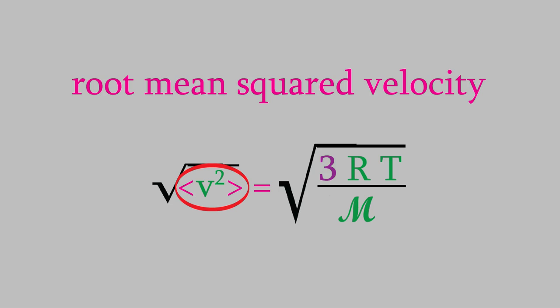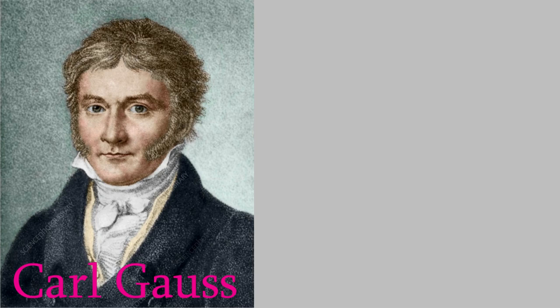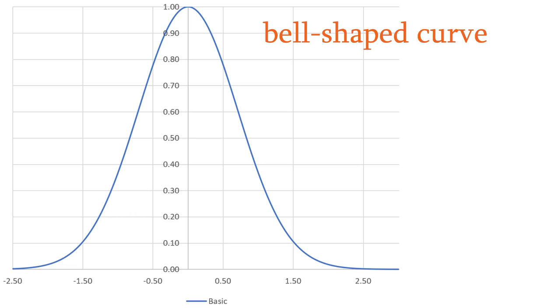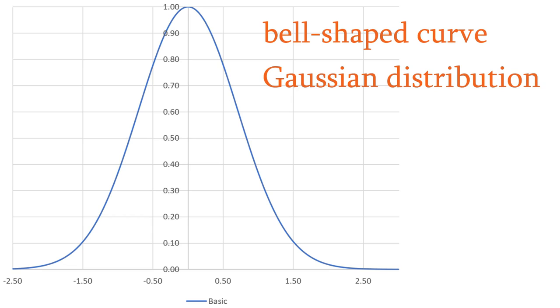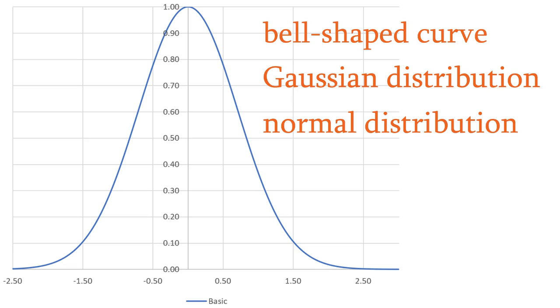To start with, let's think about what a distribution usually looks like. This question was investigated by the German mathematician Karl Gauss. He realized that a property that's randomly distributed around a mean can be described using this basic formula. When we plot this equation, we get what's usually called a bell-shaped curve. It's also called the Gaussian distribution in his honor, but the most common name for it is the normal distribution.